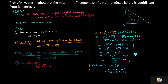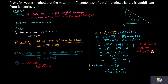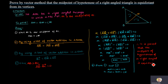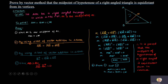Therefore, it is proved that the midpoint of the hypotenuse of a right angle triangle is equidistant from its vertices. I hope you understood it. Please comment in the comment section. Thank you everyone.